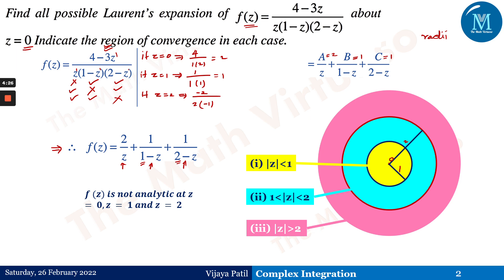You might ask why these are called Laurent expansions. Because z = 0 is also a point where the function is not analytic — even though the first region looks like a Taylor series bounded by a single circle, we get a Laurent expansion because z appears in the denominator, making z = 0 a singularity.